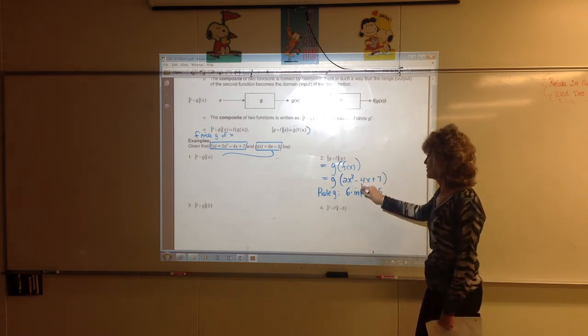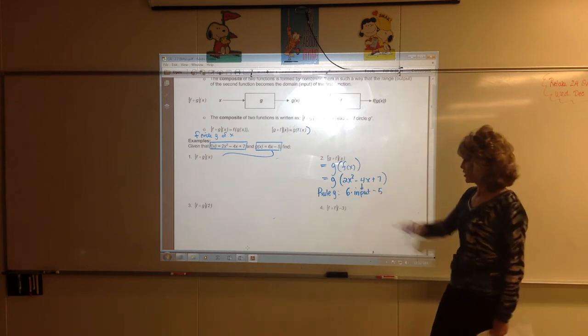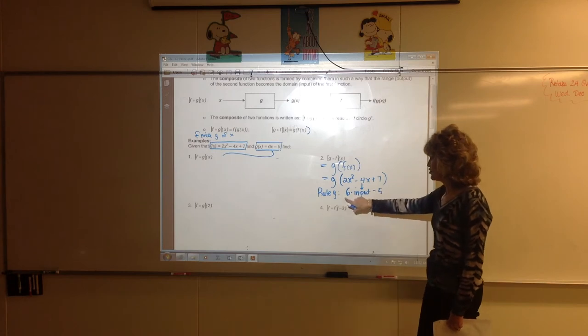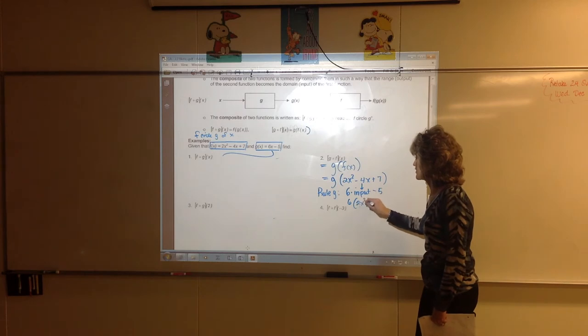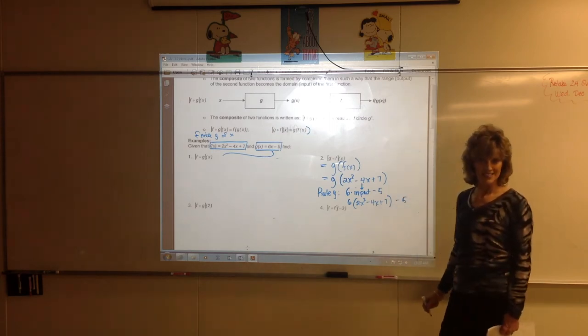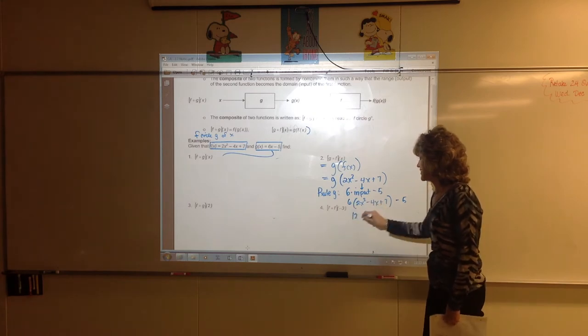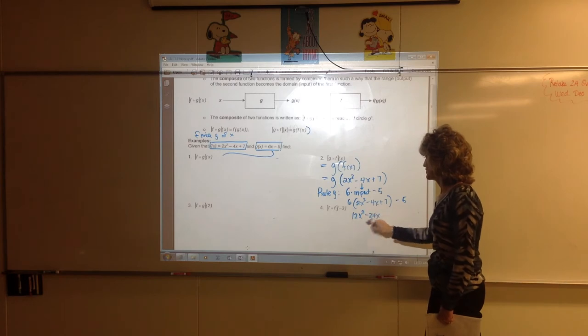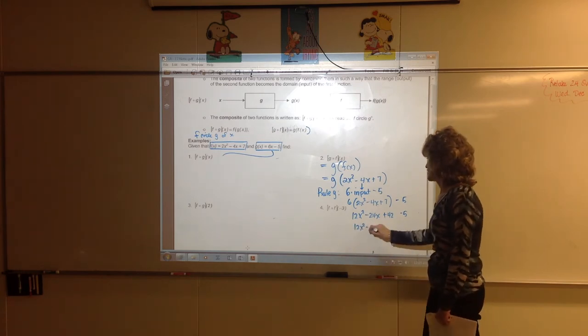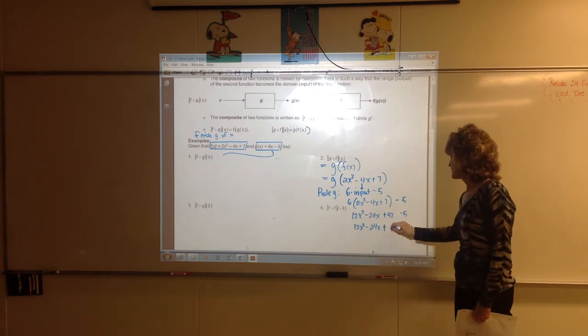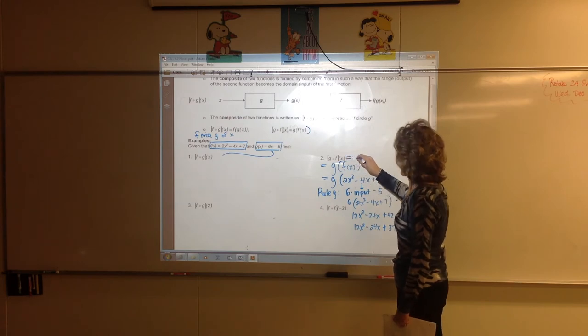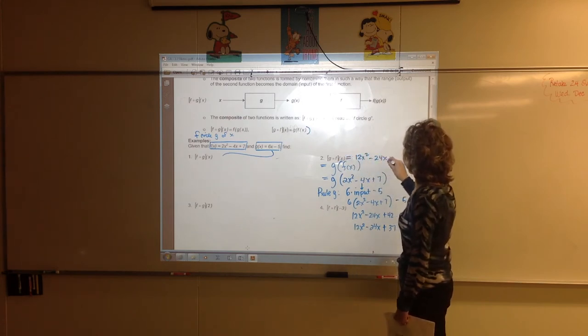So, all of this stuff becomes the input. Because we're doing G of all of this as our input. You okay, Courtney? So, if I do six times all of this input, I will do six times all of 2X squared minus 4X plus 7. Six times all of that, and then subtract five. Or distribute six. So, our conclusion is up here at the top, G circle F of X equals 12X squared minus 24X plus 37.